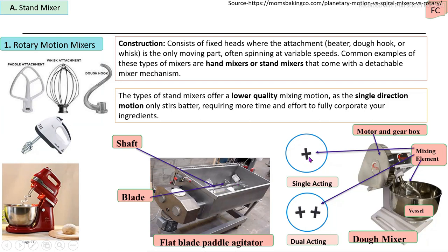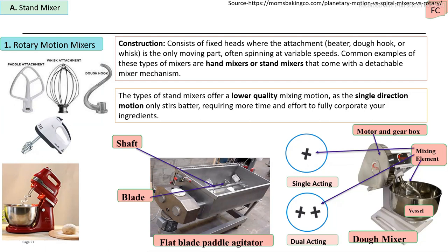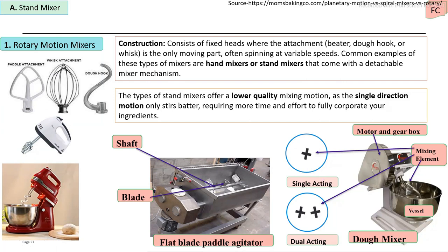The mixing speed is adjustable using a gear system and switches. The mixing action is of lower quality compared to other mixing equipment, requiring more time and effort to achieve proper mixing of ingredients. Rotary motion mixers are mostly used for small-scale processing of dough-like materials and batter-like materials.